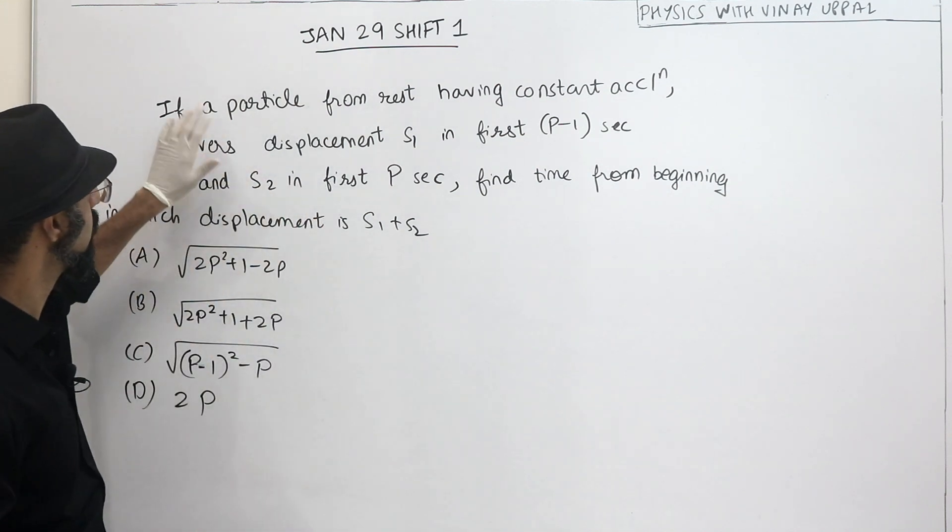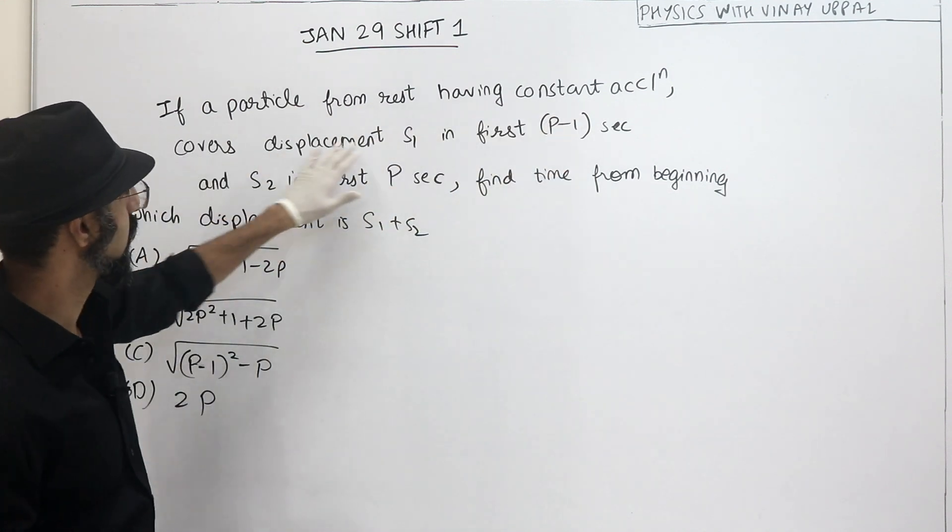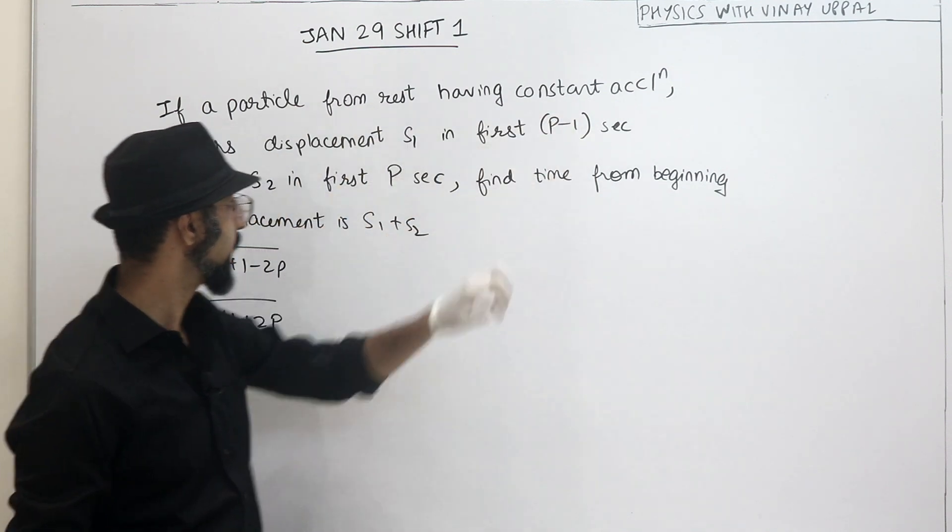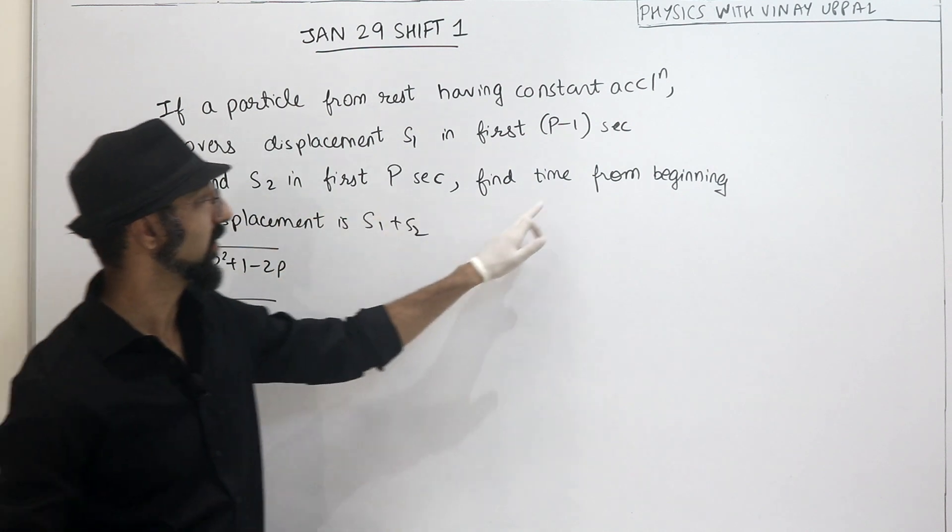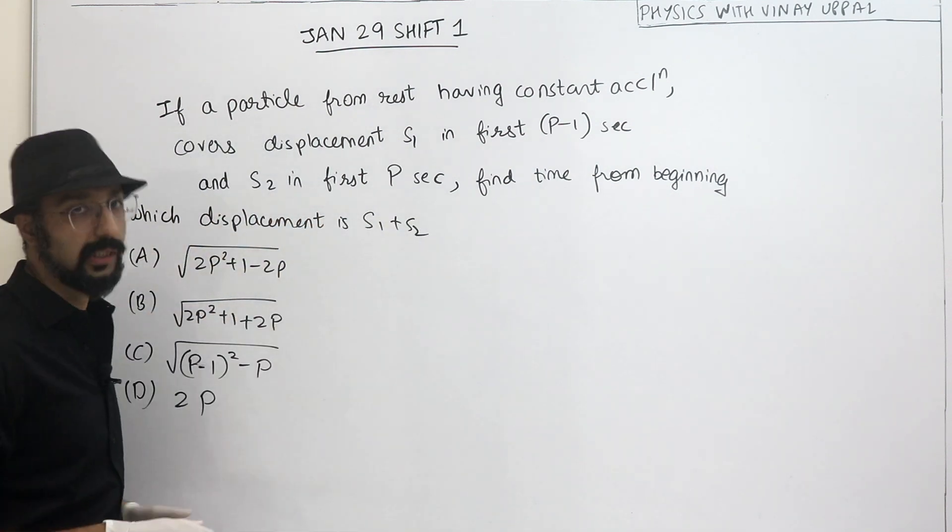Let's quickly read the question. If a particle from rest having constant acceleration covers displacement s1 in first p-1 seconds and s2 in the first p seconds, find the time from the beginning in which the displacement is s1 plus s2.